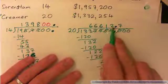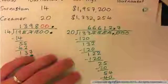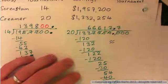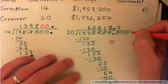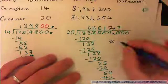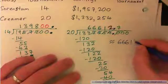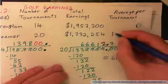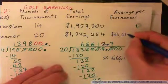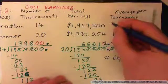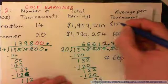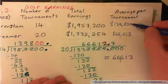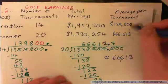So we've got 66,612.7, and if I round that to the nearest dollar — round up, right — so 66,613 is the answer. Average earnings per tournament for this player is $66,613. The other one was $139,800, so this golfer does a lot better per tournament than this one — about twice as good, really.